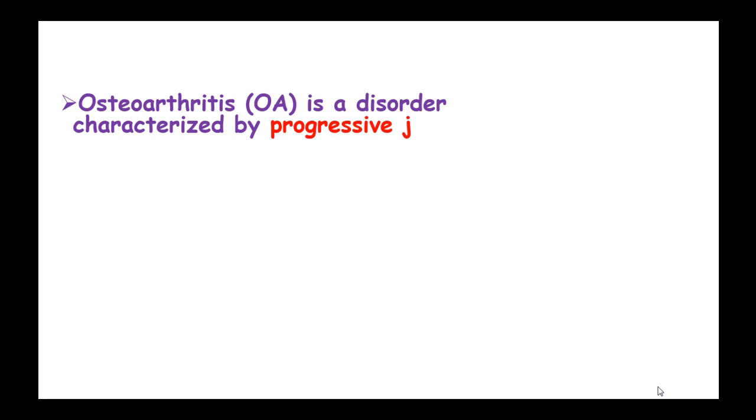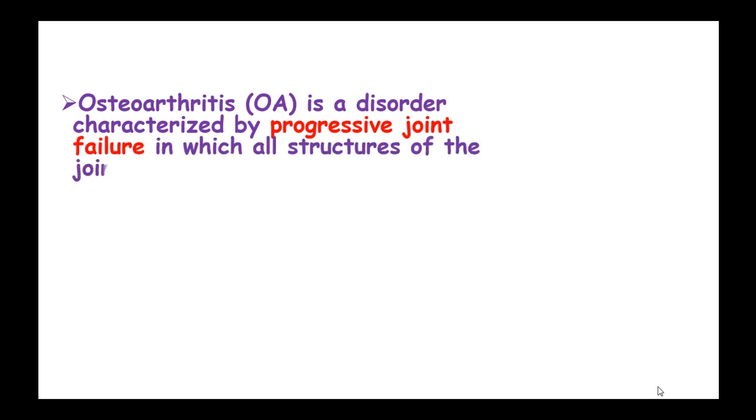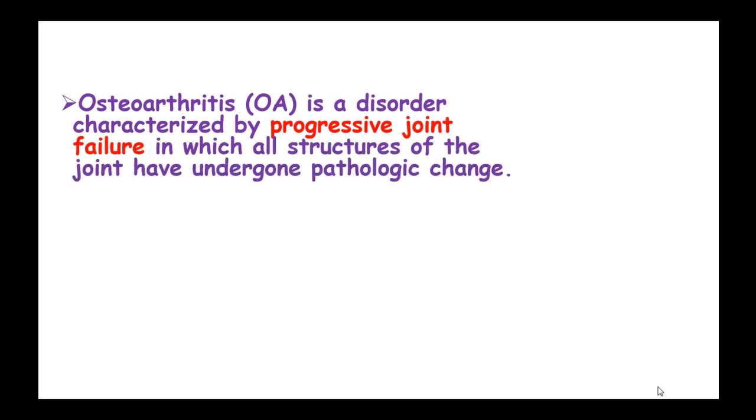Osteoarthritis, or OA, is a disorder which is characterized by progressive joint failure in which all the structures of the joint have undergone a pathologic change.